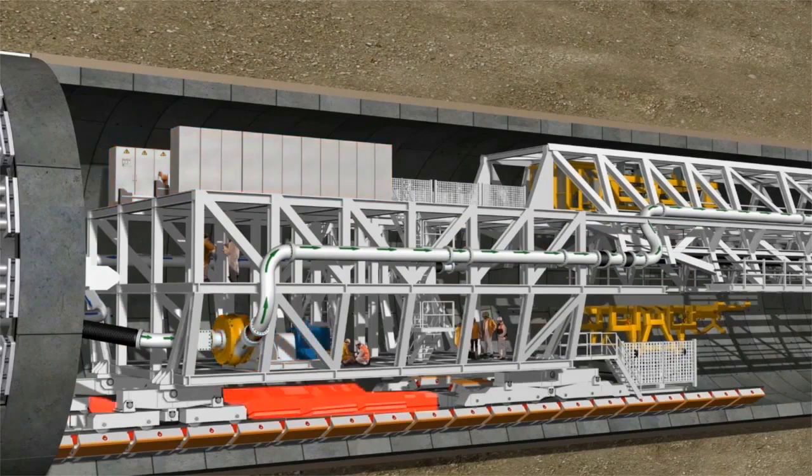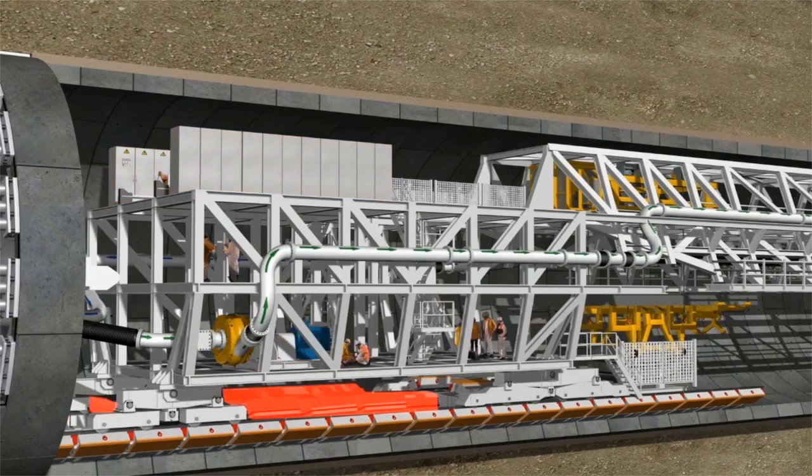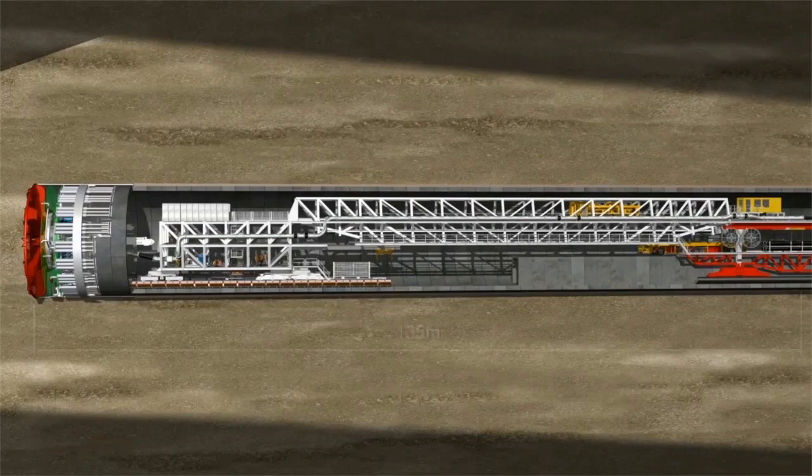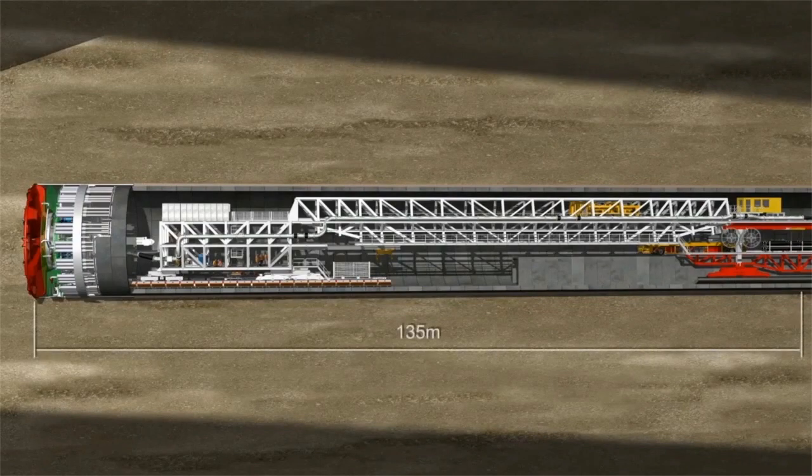The segment feeder is mounted on the first gantry to transport the segments to the erector. The total length of the mix shield up to the third gantry is 135 meters.